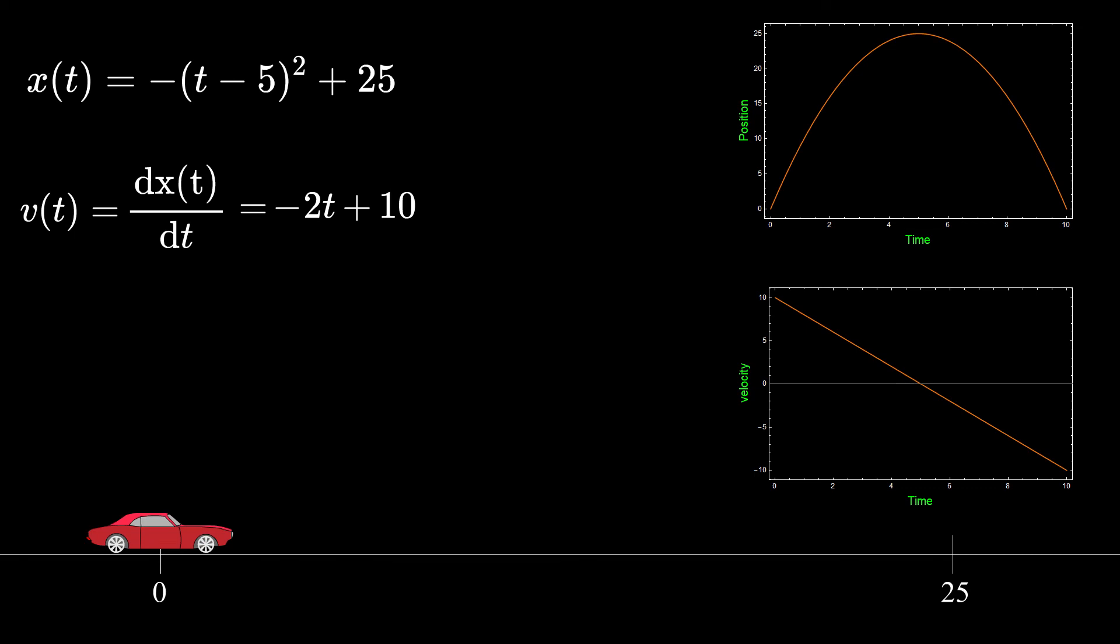This tells us what is the velocity of the car at every time point during the journey, and this is why we use derivatives in physics, because we have now much more information about the system.